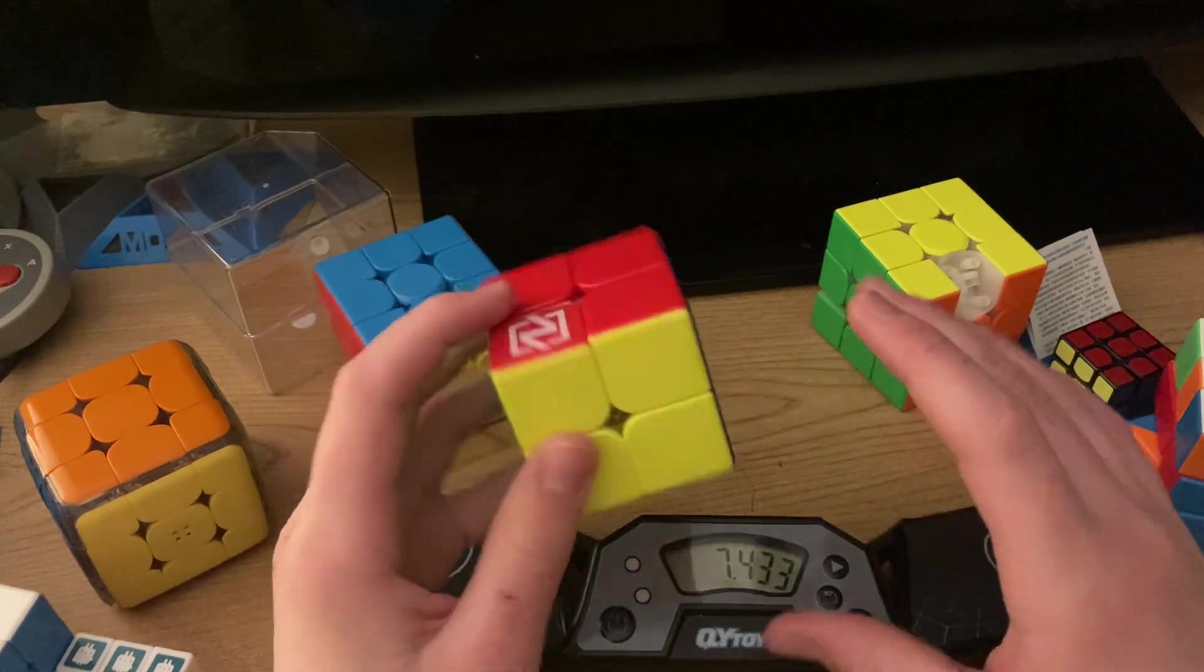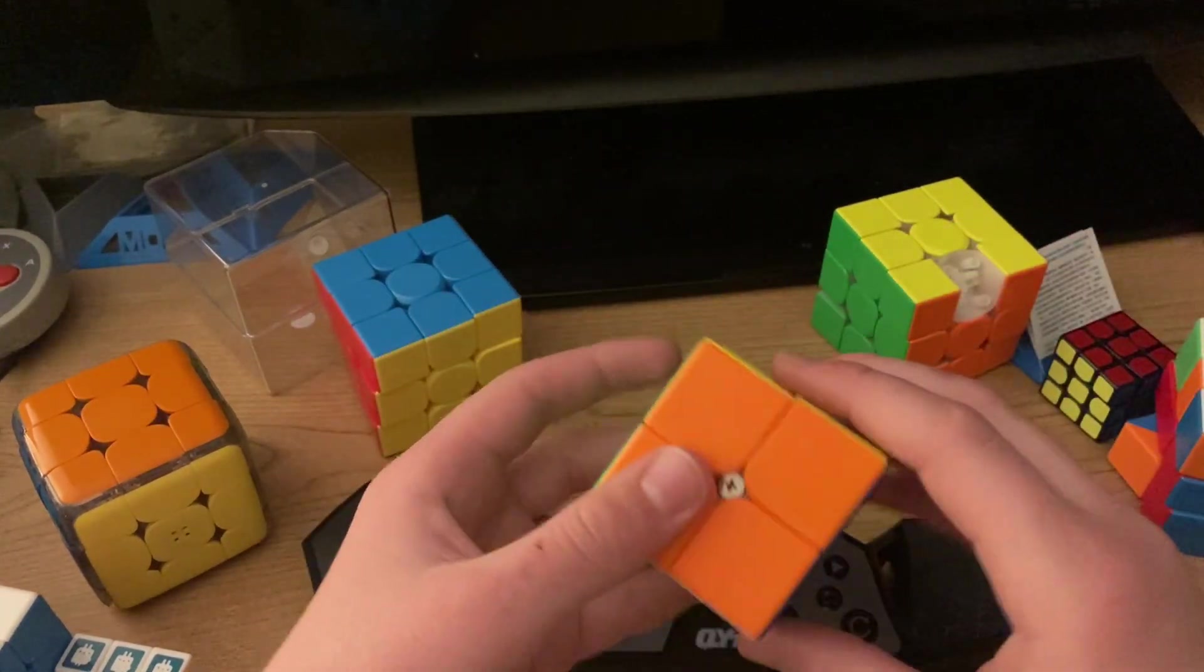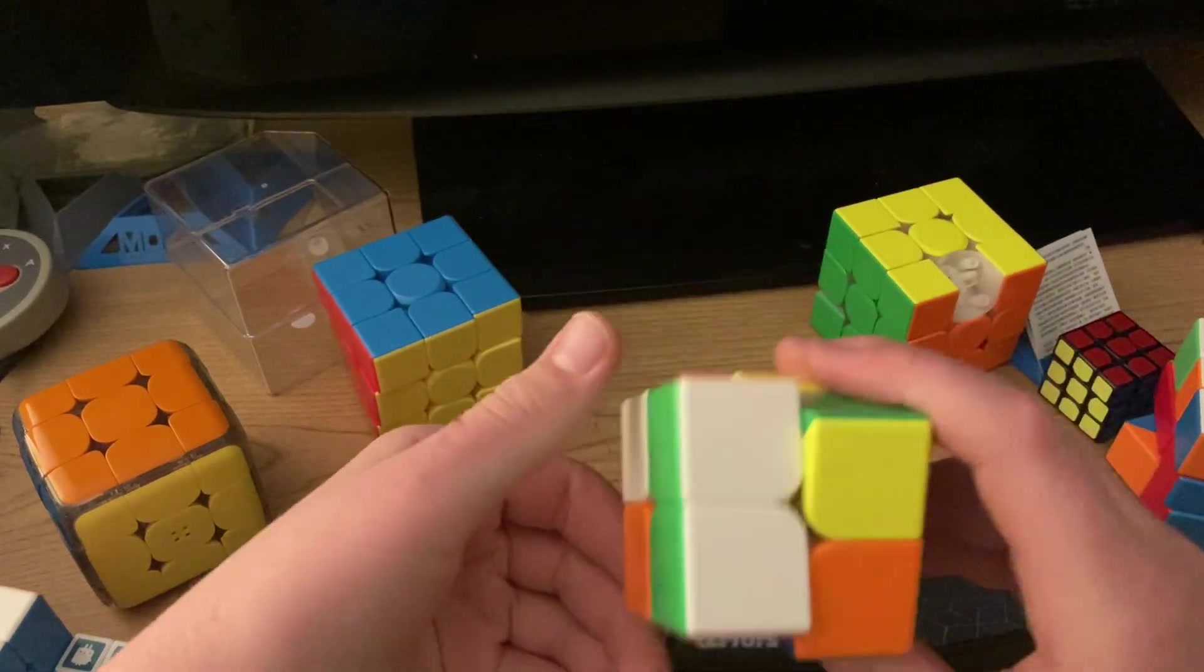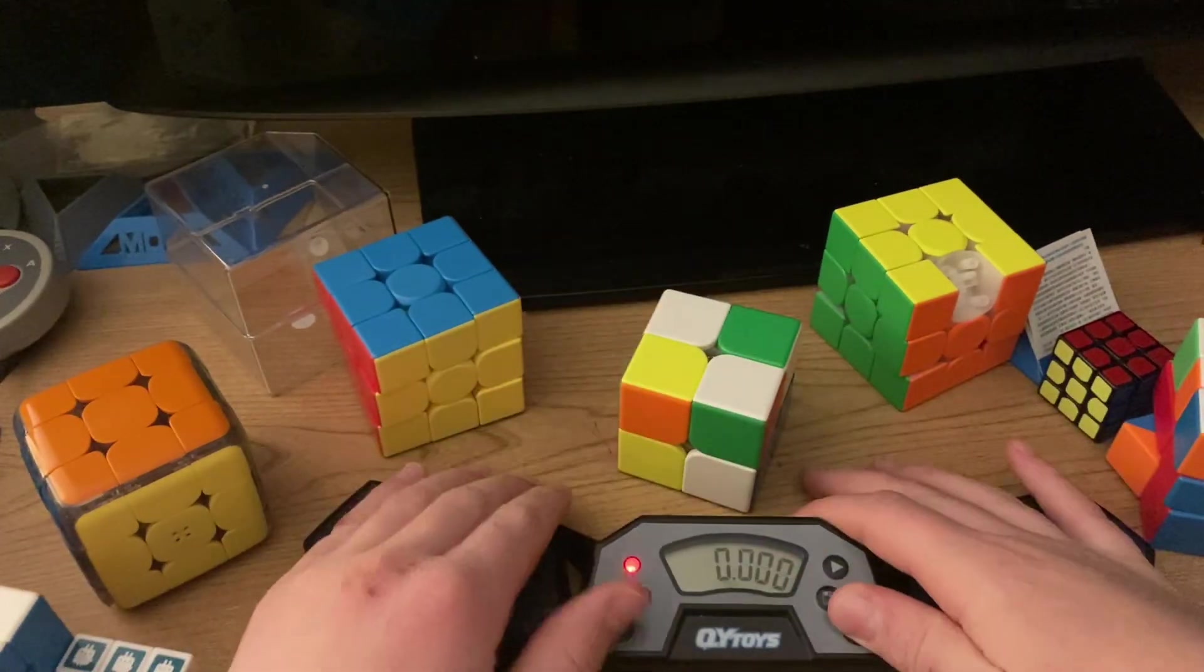This is why you have to be color neutral. If I wasn't color neutral, that would probably be like nine seconds. I'm not really perfect at color neutral solves, but I usually start with the white side.